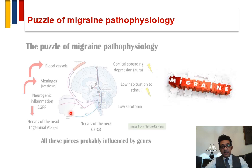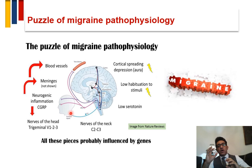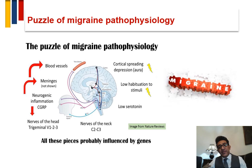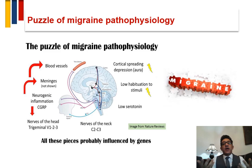Migraine pathophysiology is a puzzle with multiple pieces. Each part of the puzzle can be explained by one of the migraine theories — for example, cortical spreading depression can explain the aura but not the headache itself. The complementation of these theories together helps us understand the migraine pathophysiology puzzle.